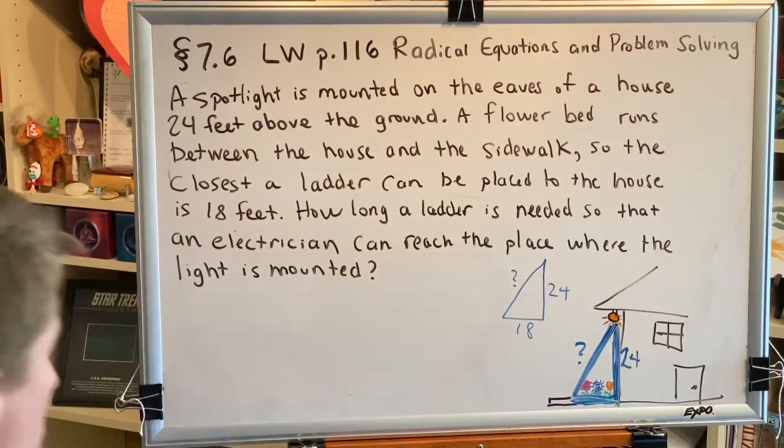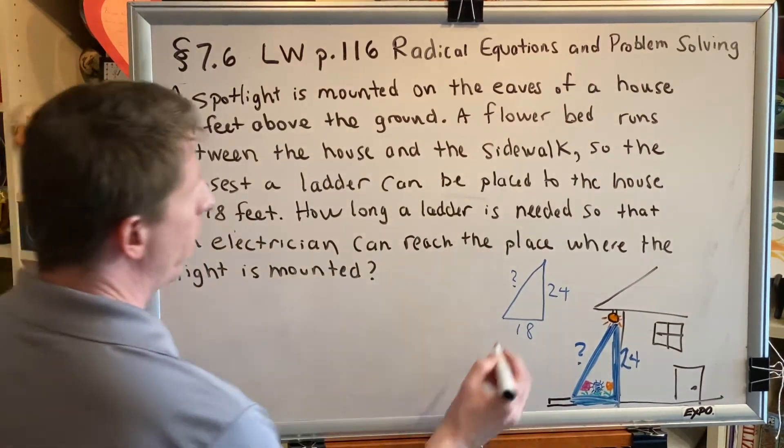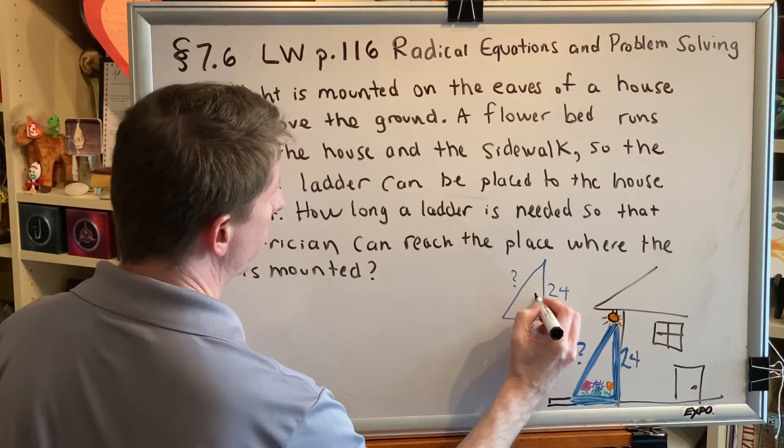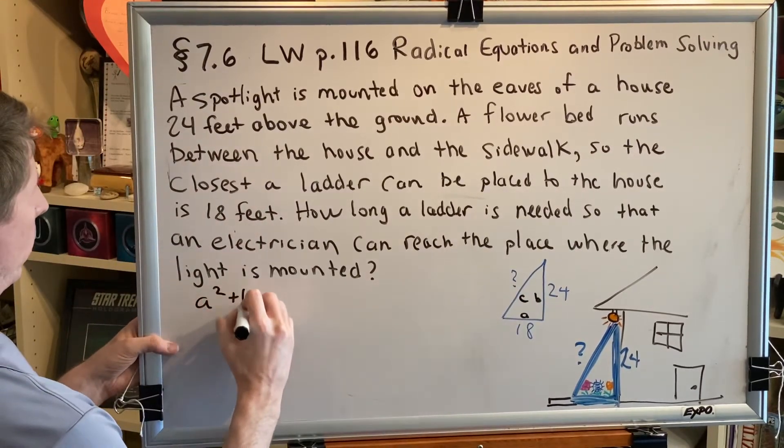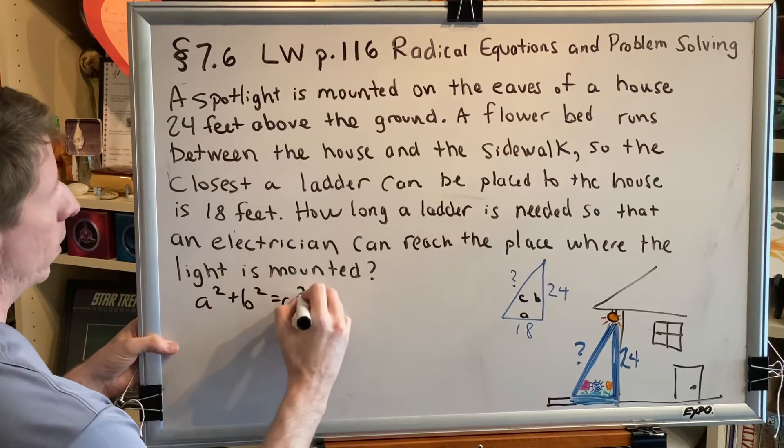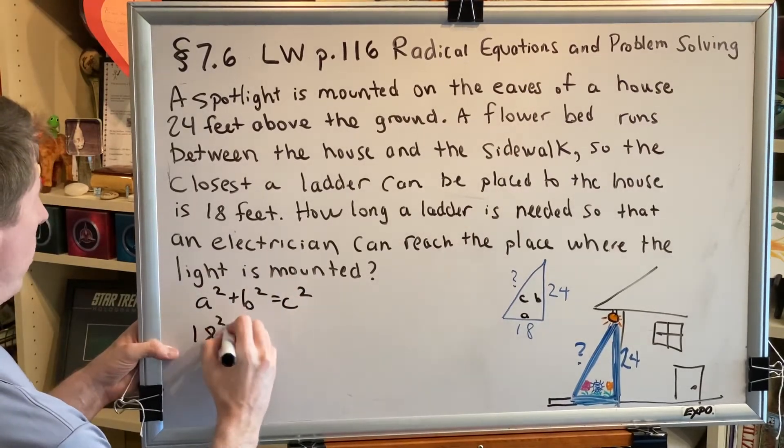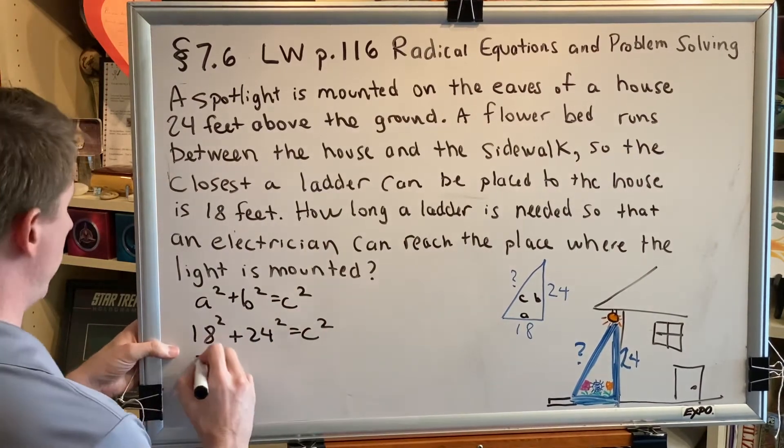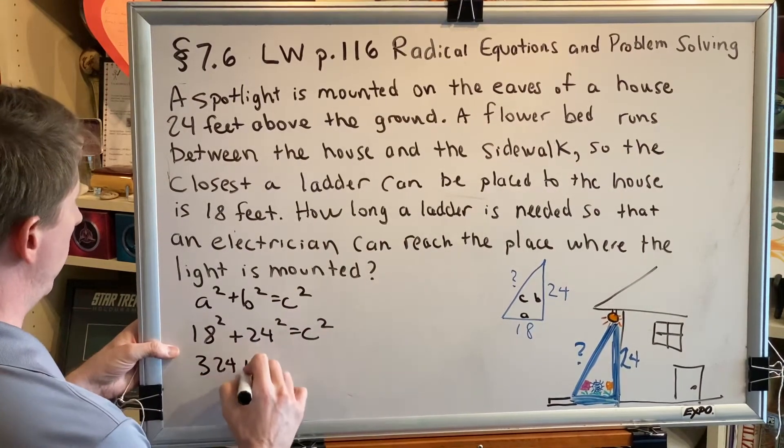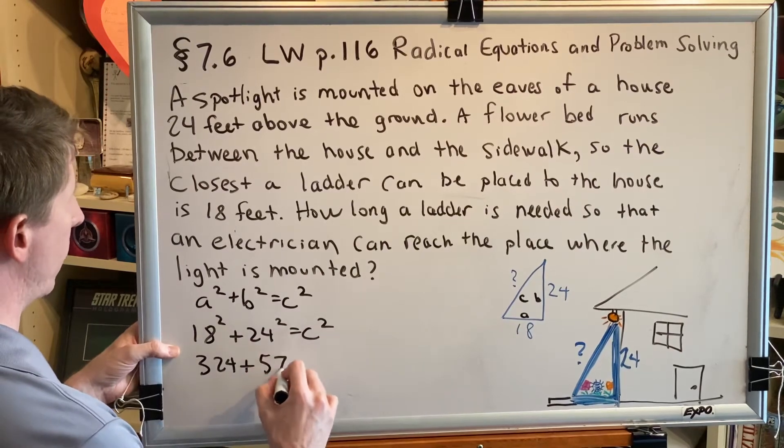Let's go ahead and solve this problem according to the Pythagorean theorem: a² + b² = c². So we get 18² + 24² = c². 18 squared is 324, 24 squared is 576.